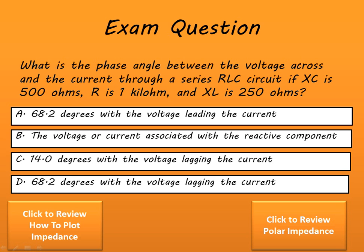Here's an example. What is the phase angle between the voltage across and the current through a series RLC circuit if capacitative reactance is 500 ohms, resistance is a kilohm, and inductive reactance is 250 ohms?